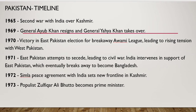The Awami League, led by Mujibur Rahman, won the elections in East Pakistan. West Pakistan was very tense about this and began torturing people of East Pakistan, which led to discontent among Bengali Muslims and brought the country close to civil war. India intervened in 1971 in support of Mujibur Rahman, a war broke out between India and Pakistan, and this led to the formation of Bangladesh — a new country separated from Pakistan with India's help.